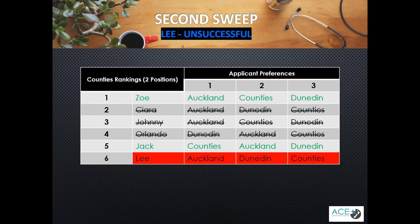Finally, Counties was Lee's third preference. Jack was matched in the first sweep and Zoe in the second, so therefore they would have filled their positions before the third sweep, where Lee would have been considered for a position. Therefore, Lee isn't matched or offered in any of our example intake.